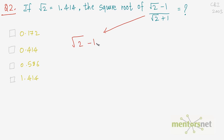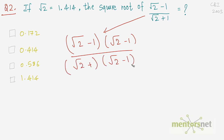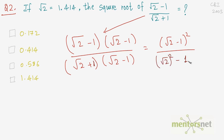So we get (√2 - 1)(√2 - 1) divided by (√2 + 1)(√2 - 1). The numerator is (√2 - 1)², and the denominator follows the pattern (a + b)(a - b) = a² - b², giving (√2)² - 1² = 2 - 1 = 1. So the expression simplifies to (√2 - 1)².